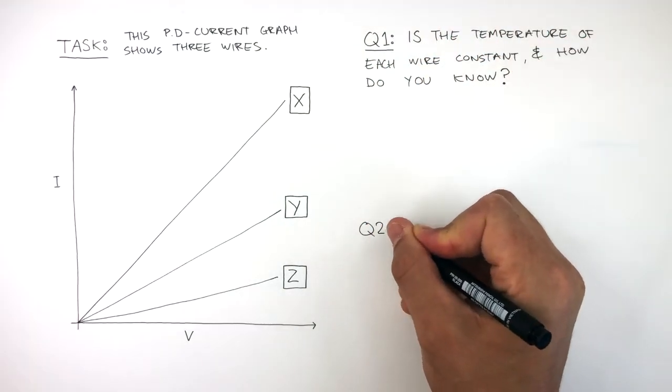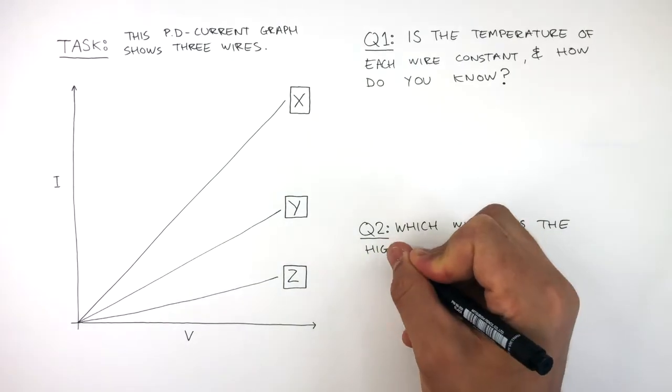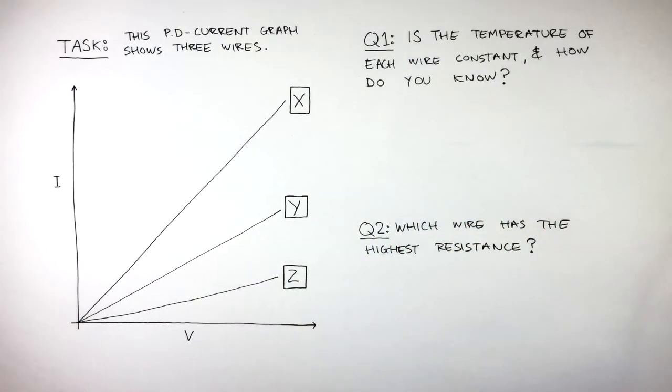Question two is: which wire has the highest resistance? Pause now and attempt these questions. The answers will follow.